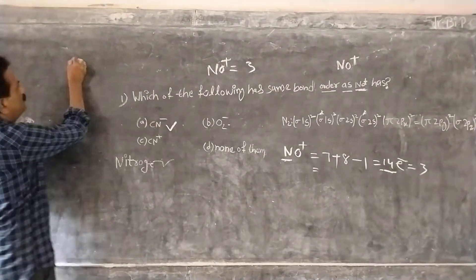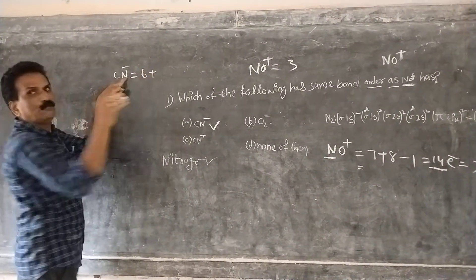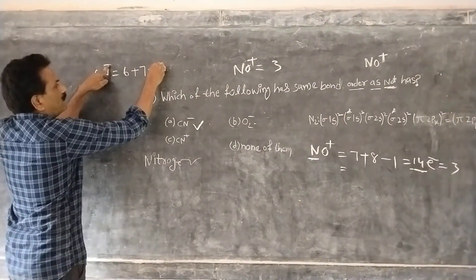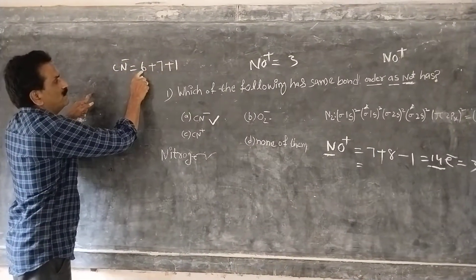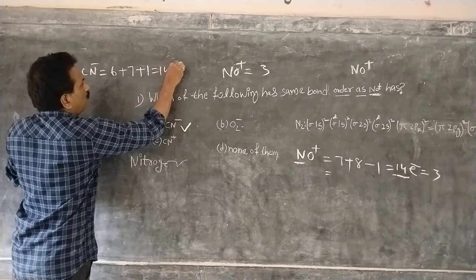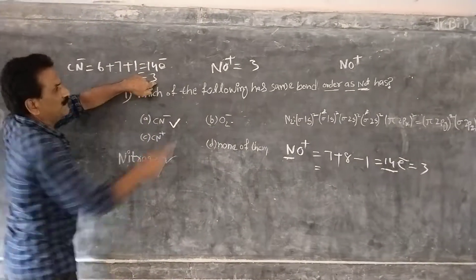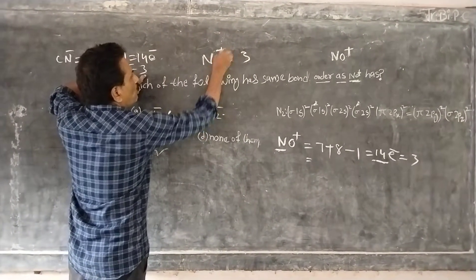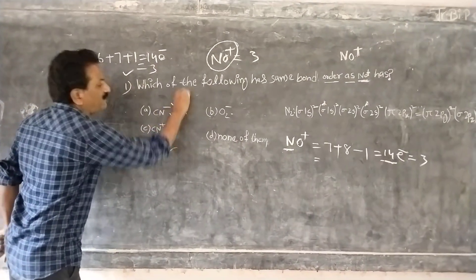Let us check CN⁻. Carbon has atomic number 6, nitrogen has atomic number 7. The minus sign means we add 1 electron. So 6 plus 7 equals 13, plus 1 equals 14 electrons. 14 electrons means bond order is 3. So CN⁻ has the same bond order as NO⁺ — bond order is 3. CN⁻ is the correct answer.